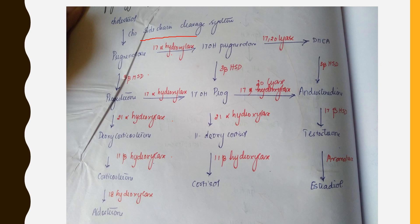Then 17-hydroxyprogesterone becomes 11-deoxycortisol — on the aldosterone side it is deoxycorticosterone, on the cortisol side it is 11-deoxycortisol — which then gets converted to cortisol. 17-hydroxypregnenolone can get shunted into the sex steroid pathway, becoming dehydroepiandrosterone (DHEA), a weak androgen. This gets converted to androstenedione, then to testosterone, and in the presence of aromatase becomes estradiol.